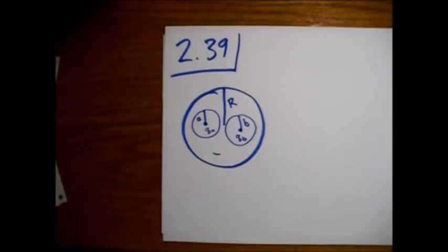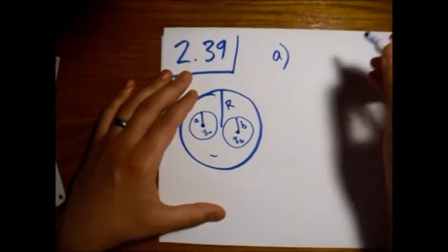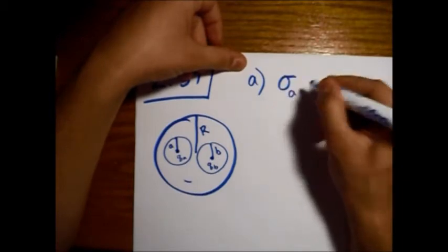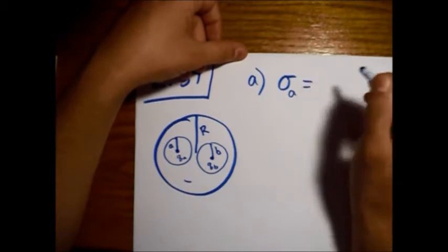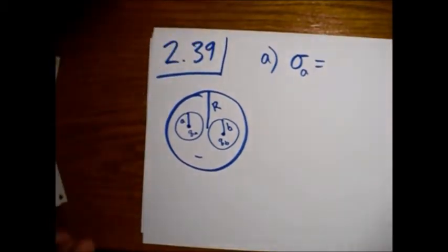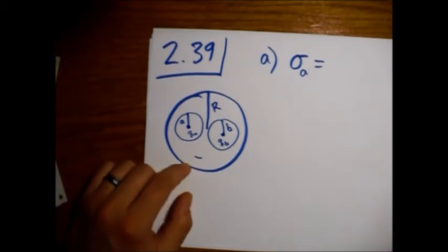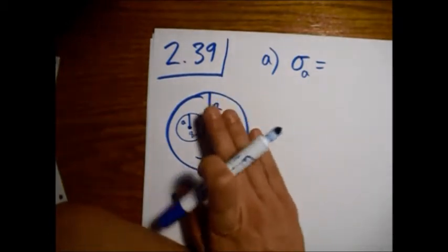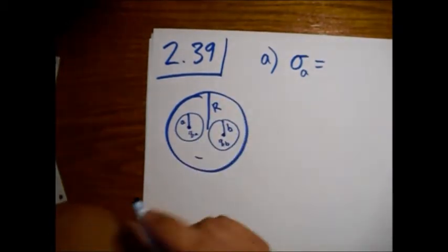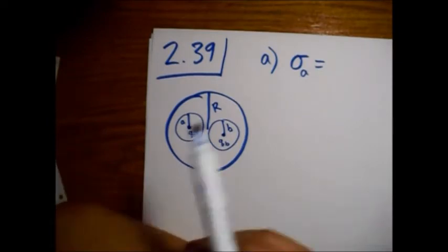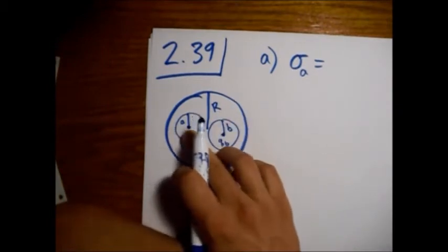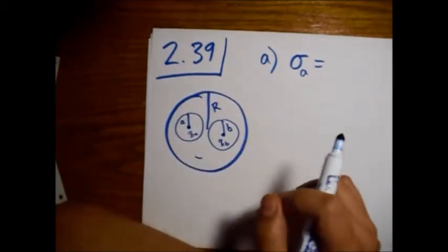Find the surface charge densities at A, B, and R. This is the first part, part A. Alright, so sigma A. Basically, we have a similar circumstance. If we look at each of these individually, we have something sort of similar to problem 2.38, where we just have, now the sphere of charge is just a point charge in the middle.